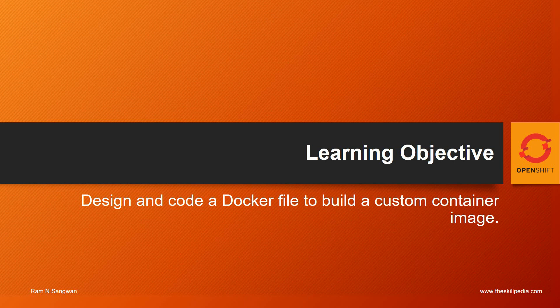Hello friends, welcome to session 5 on OpenShift container management training. This session is on creating custom container images. The last two sessions demonstrated how to create images using a Dockerfile based on existing images. In this session, we'll understand the depth of the Dockerfile, the build instructions we put into a Dockerfile, and we'll create an image without using any base image and run it.